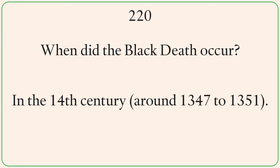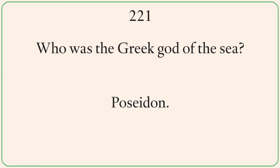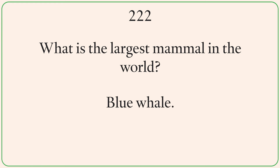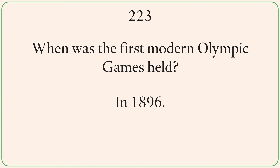When did the Black Death occur? In the 14th century, around 1347 to 1351. Who was the Greek god of the sea? Poseidon. What is the largest mammal in the world? Blue whale. When was the first modern Olympic Games held? In 1896.